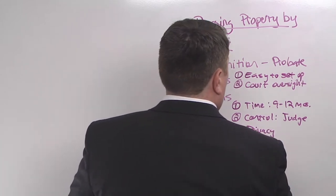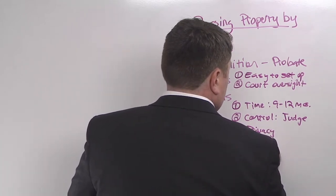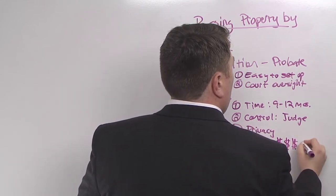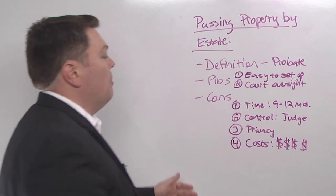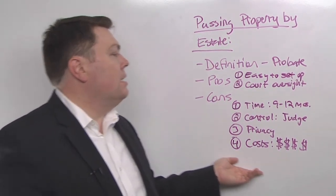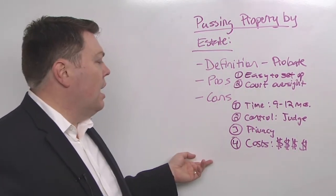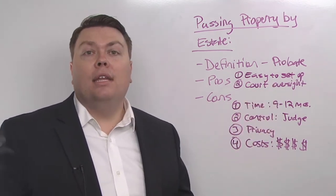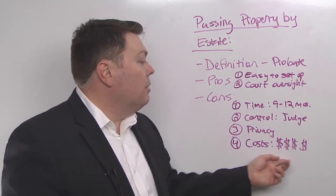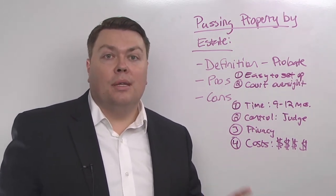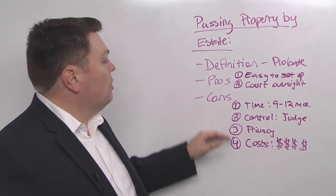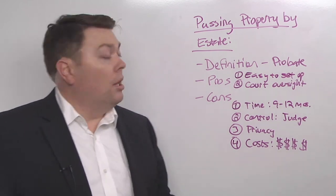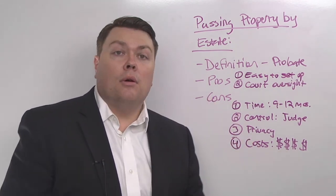Number four, it's costly. If it was like the Yelp ad, we'd be talking about four dollar signs here. There's a way to calculate the costs that are associated with probate. I'm not going to go through that with you today, but it is all based on your gross estate. Again, they pretend like you don't have any debts when they're calculating how much probate is going to cost. The fees get pretty exorbitant pretty fast. Those are some of the big downsides of just letting your property pass through the estate. But it is easy to set up, and if you need court oversight, it's there.